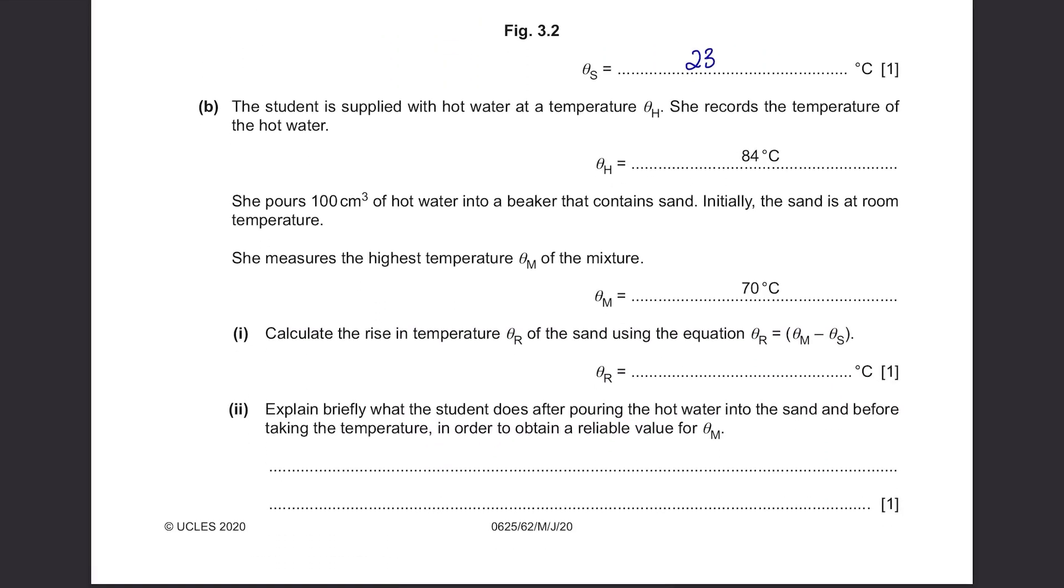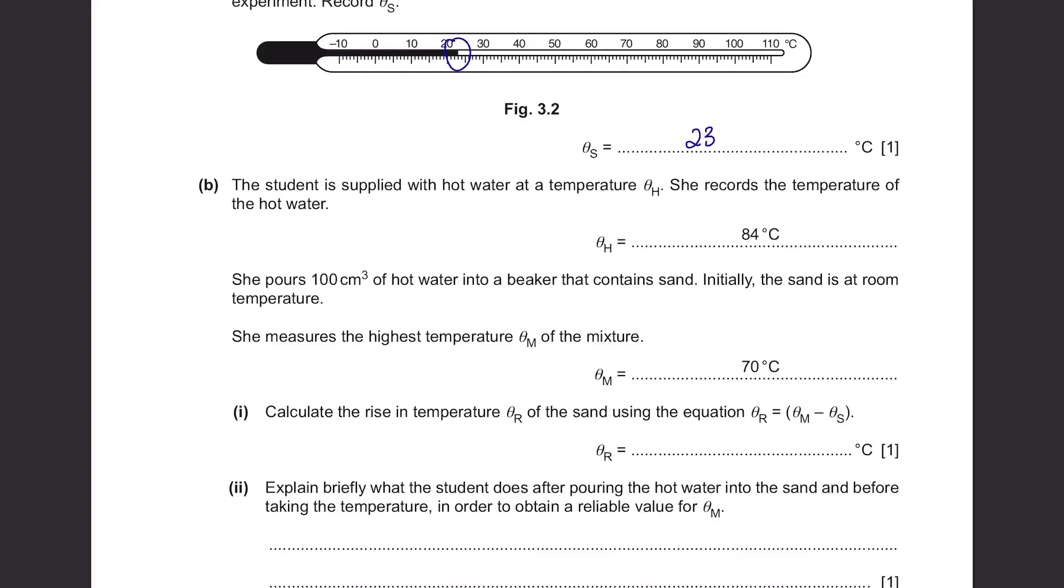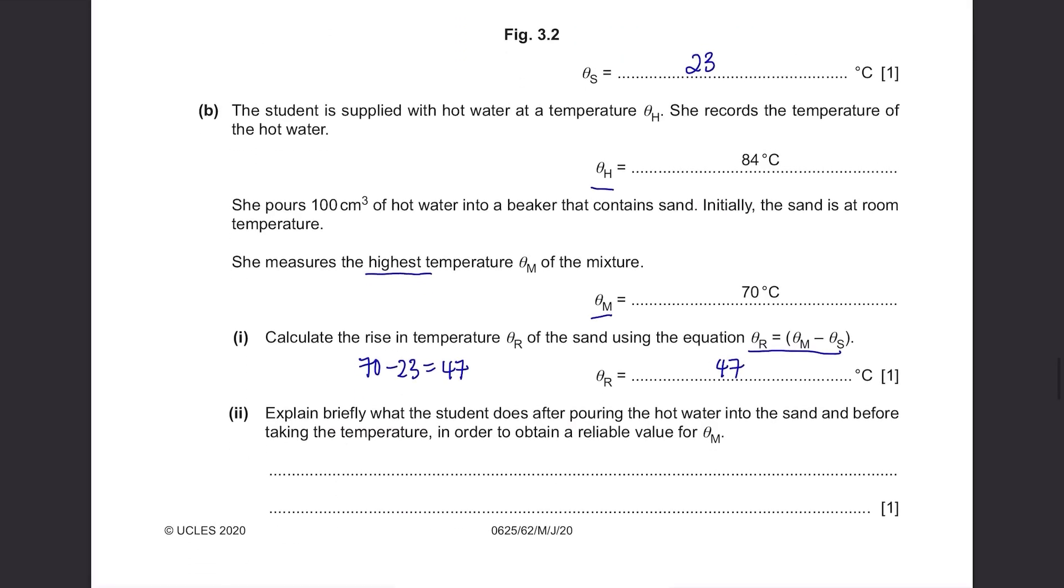Part B. The student is supplied with hot water at the temperature theta-h. She records the temperature of the hot water. It's 84 degrees Celsius. She pours 100 cm³ of hot water into a beaker that contains sand. Initially, the sand is at room temperature. She measures the highest temperature theta-m of the mixture. After adding 84 degrees Celsius hot water, the water and sand mixture became 70 degrees Celsius. Calculate the rise in temperature theta-r of the sand using the equation theta-r equals theta-m minus theta-s. Theta-m was 70 and theta-s was 23, so it's 47.